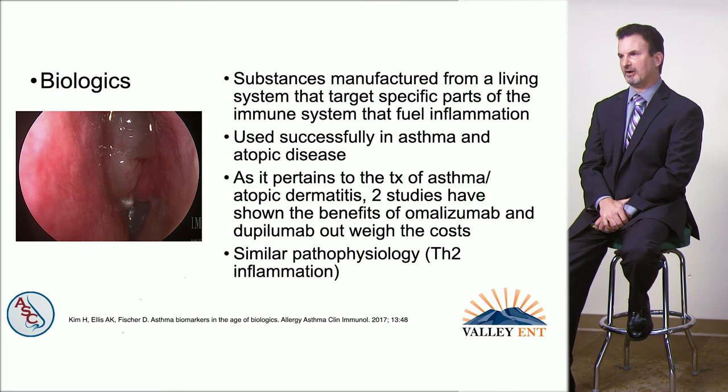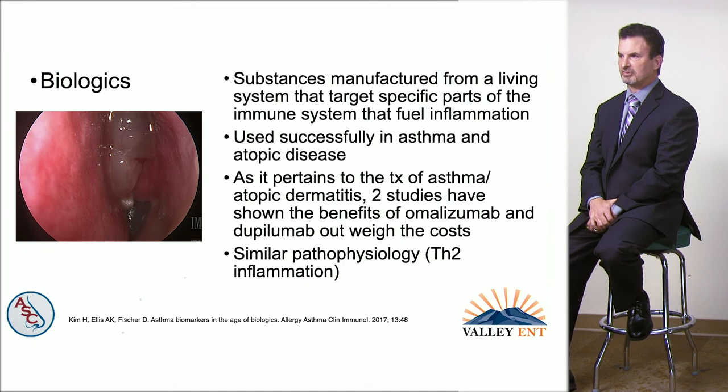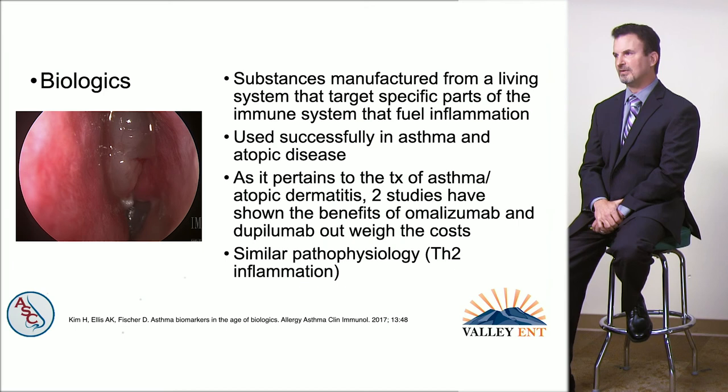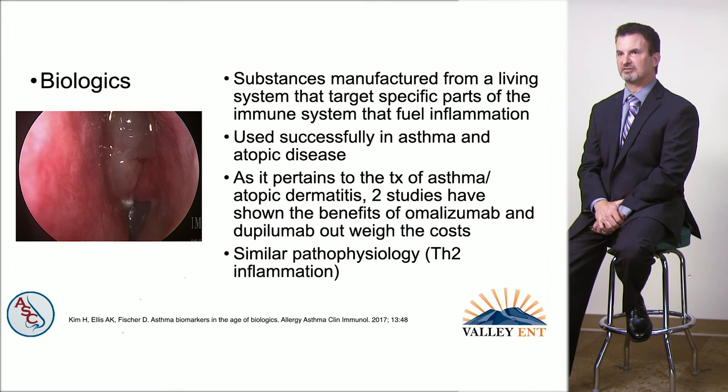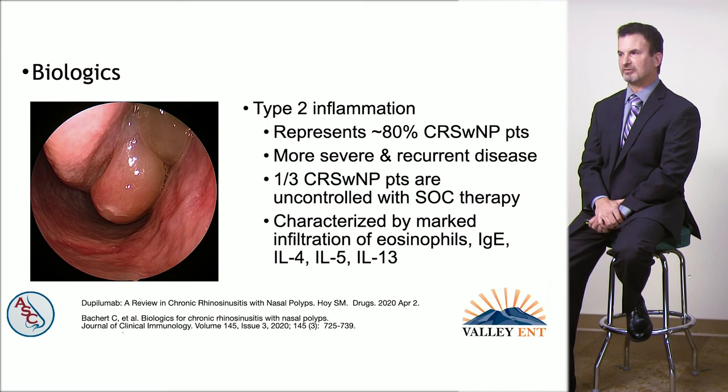For the last part of the talk I'll cover biologic modifier therapy, a very exciting area. In the last one to two years these drugs have demonstrated significant benefit. They are defined as substances manufactured from a living system that targets specific parts of the immune system fueling inflammation. They've been used successfully in asthma and atopic disease and have been shown to be cost effective in those conditions, which share similar pathophysiology — specifically type 2 inflammation — with polyp patients.